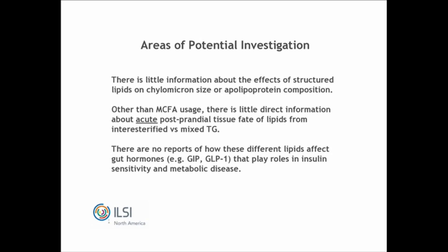One study looked at incorporation of DHA and EPA into brain phospholipids in rat dams and pups and wasn't able to see an effect of dietary lipid structure. In one study, EPA — but not DHA — delivery to splenocytes was increased, but only if it completely replaced all 18:3 in the SN2 position of the fed triglyceride. There are no reports I could find on how different structured lipids might affect secretion of gut hormones like GIP or GLP-1, which play significant roles in insulin sensitivity and metabolic disease.